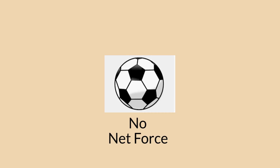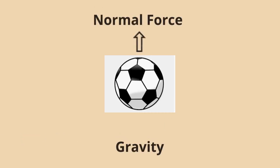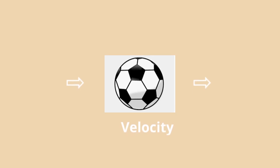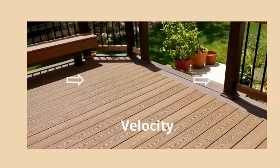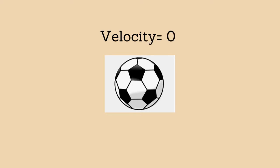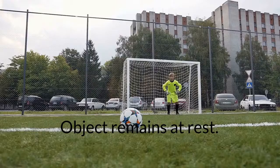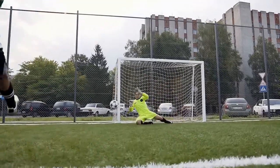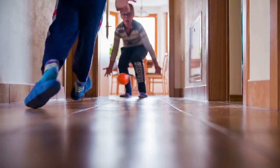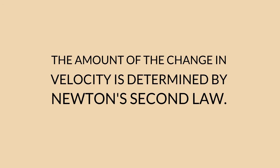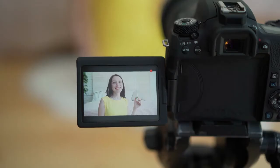The key point here is that if there is no net force resulting from unbalanced forces acting on an object — so if all the external forces cancel each other out — then the object will maintain a constant velocity. If that velocity is zero, the object remains at rest. And if an additional external force is applied, like someone kicking a ball, the velocity will change. The amount of that change in velocity is determined by Newton's second law of motion, which we will talk about in another video.